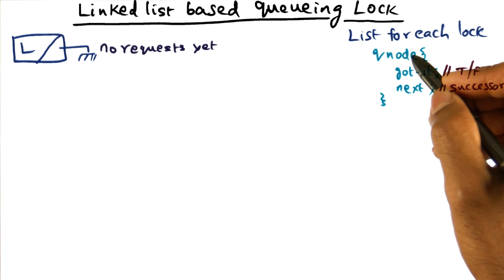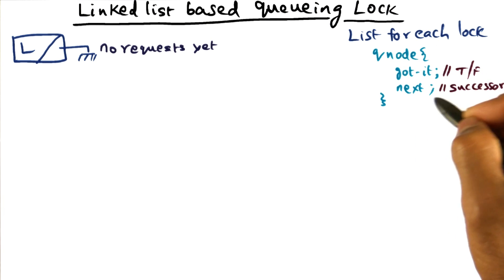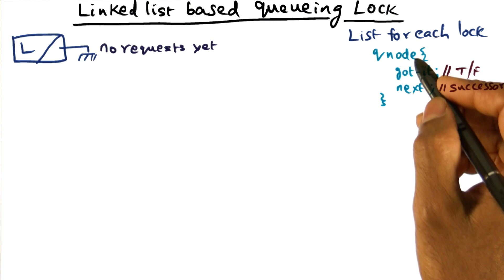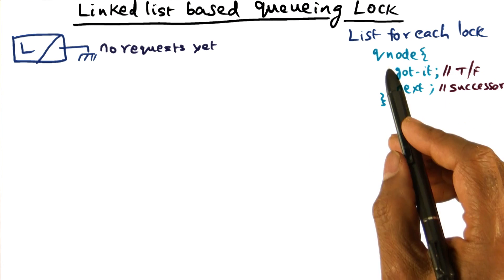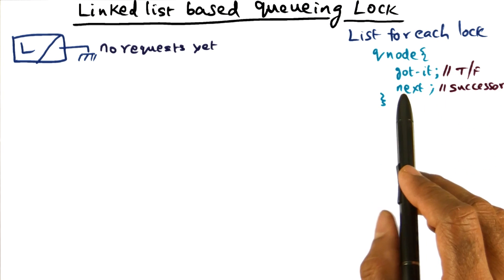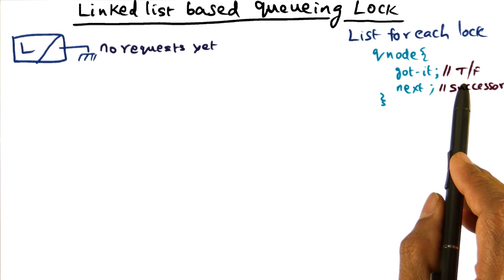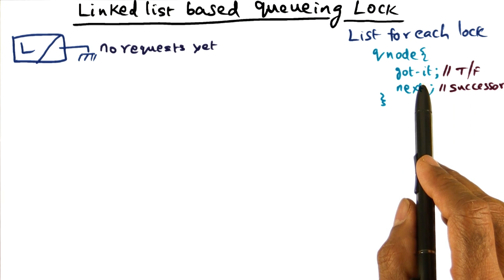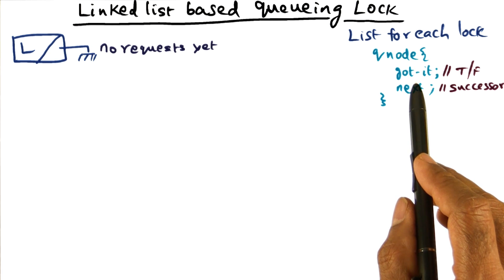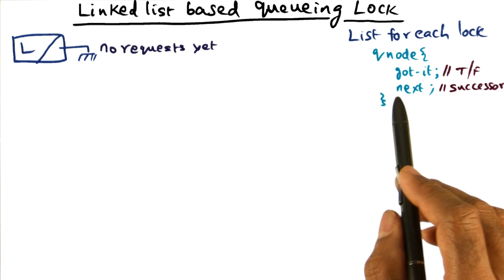There are two fields for every queue node for a requester. Every new requester is going to get this queue node. One field is the guarded field. Guarded is basically a boolean that says whether I have the lock or not. If it is true, I've got it. If it is false, I don't have it yet.